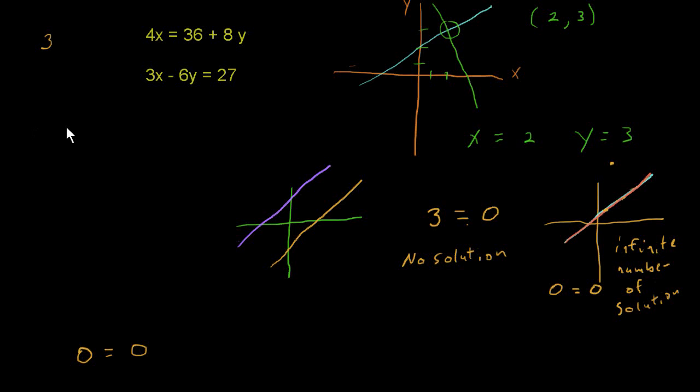I'm going to put that first equation in standard form by moving the y variable over to the left side. So I'll have 4x minus 8y, subtracting 8y from both sides, equals 36. And the second equation is already in standard form, so I'm just going to rewrite that second equation.